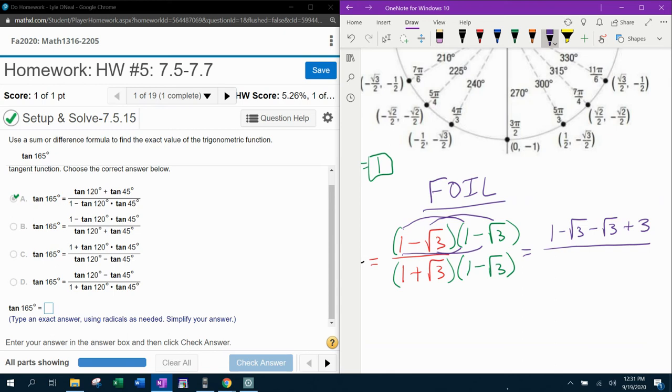In the denominator, here we go. Let's F it up again. First, one times one is one. On the outside, negative square root of three. On the inside, we have a positive square root of three. And last but not least, we have a negative times a positive, which is negative. Square root of three times square root of three is square root of nine, which is three. And now let's simplify.